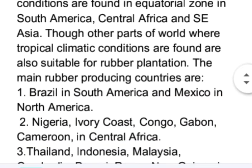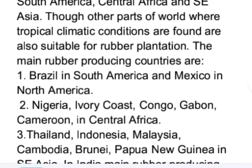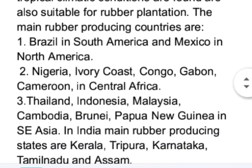The main rubber producing countries are Brazil in South America and Mexico in North America; Nigeria, Ivory Coast, Congo, Gabon, and Cameroon in Central Africa; and Thailand, Indonesia, Malaysia, Cambodia, Brunei, and Papua New Guinea in South East Asia.